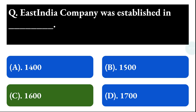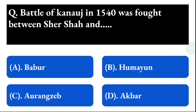Next question: the Battle of Kanauj in 1540 was fought between Sher Shah and — option A: Babur, option B: Humayun, option C: Aurangzeb, option D: Akbar. The correct answer is option B, that is Humayun.